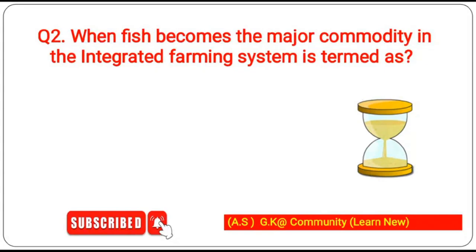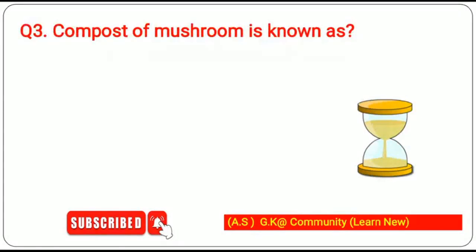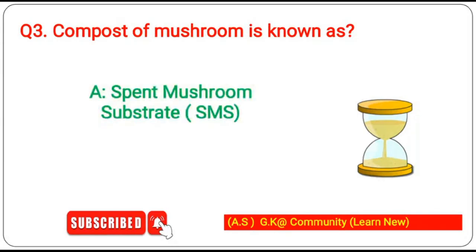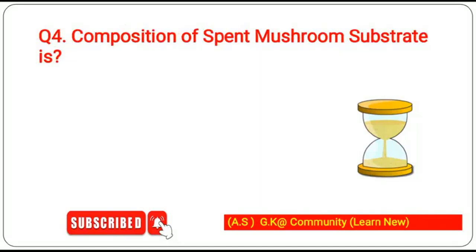— it is known as Integrated Fish Farming (IFF). Third question: compost made of mushroom is known as — it is known as Spent Mushroom Substrate (SMS). Fourth question: what is the composition of spent mushroom substrate?